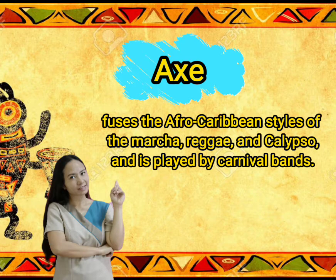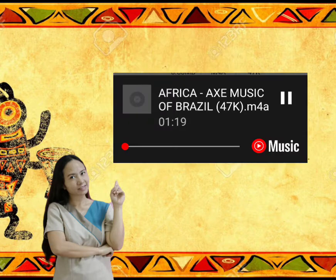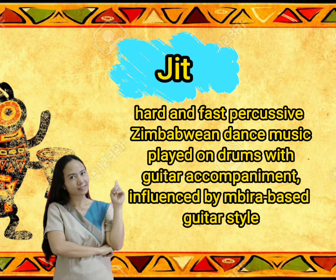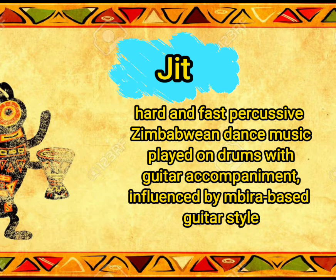The next genre is Axe. Axe is a popular musical genre from Salvador, Bahia, and Brazil. It fuses the Afro-Caribbean styles of Marcha, Reggae, and Calypso and is played by Carnival bands. Now let us listen to Axe music. The next genre is Jit. Jit is a hard and fast percussive Zimbabwean dance music played on drums with guitar accompaniment influenced by Mbira-based guitar style. Here is an example of Jit music.